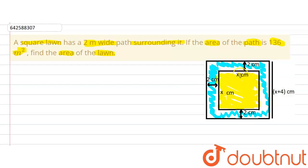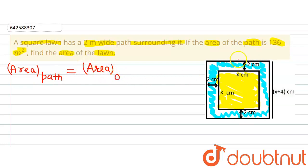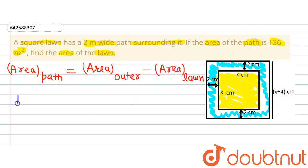We are assuming the side of the lawn to be x. Then we can observe that the area of the path surrounding the lawn will be equal to the area of the outer square minus the area of the lawn. The area of the path is already given as 136 meter square.